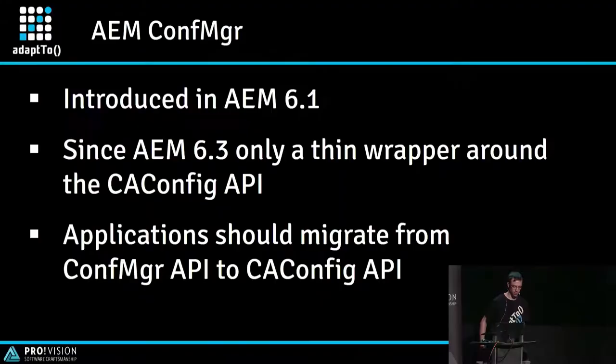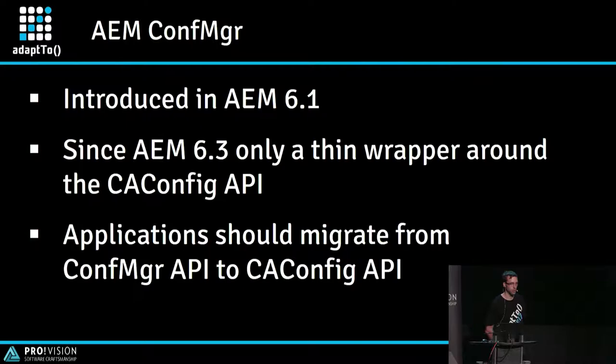If you've used AEM Conf Manager in your application — it was introduced in 6.1 but nearly undocumented — in AEM 6.3 it's still present but is only a thin wrapper around Sling context-aware configuration. So if you've used it, it makes sense to migrate your applications to directly use the Sling context-aware configuration API.